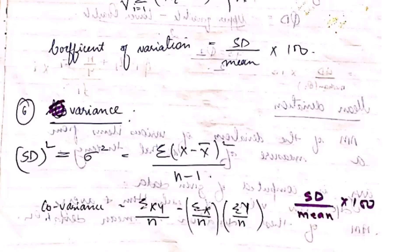Variance is the average of the squared differences from the mean. For example, if we want to find the height of 10 students, we first calculate the mean, then take each difference between values, square it, and average the result — that gives us the variance. For standard deviation, we simply take the square root of the variance.